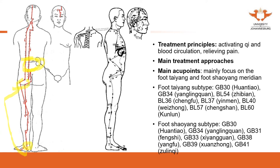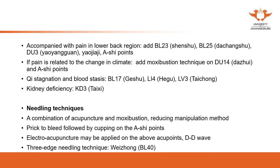If the patient presents with pain on both the side and the back of the leg, both the Tai Yang and Shao Yang meridians are affected, so you select points from both groups. Useful combination points include GB30, GB34, BL40, Yin Men (BL37), GB39 (Xuanzhong). If the patient also presents with lower back pain, add lower back points.